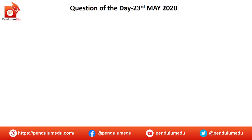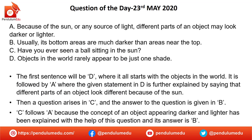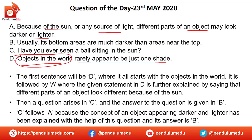Now we will see the explanation and how to solve this question. We will see that 'Objects in the world rarely appear to be just one set' — this is the main subject of the paragraph. Because of the sun or any source of light, different parts of an object may look darker or lighter. So here D is the opening sentence, then you explain it, giving the reasoning, and then answer it. This way the sequence of this paragraph will be D, C, A, B.